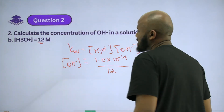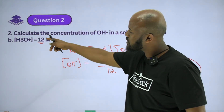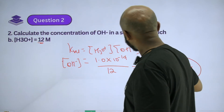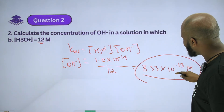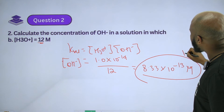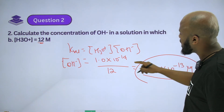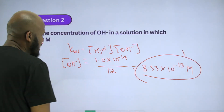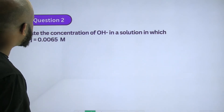So for 12 molar H3O⁺, the hydroxide concentration is 8.33×10⁻¹³ molar. The concentration of hydroxide is 8.33×10⁻¹³ molar. Good.